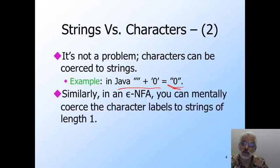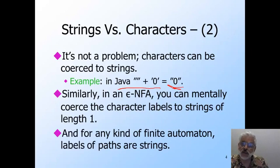So for an epsilon NFA, just think of the characters labeling the arcs as strings of length one. Then you can concatenate the epsilons and characters along any path and get a string naturally. As with any kind of automaton, the sequence of labels along any path is of type string.